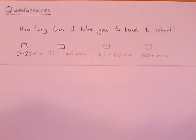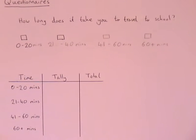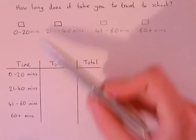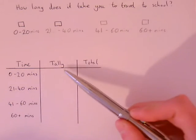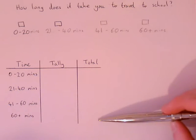So the best way to put this data into a table is to use a tally chart. I've got one drawn already just here. So I've got the time it takes people to walk to school, the same boundaries that are in the questions. A tally, which is something I'll explain in a second, and then I'm going to have the total amount of people.